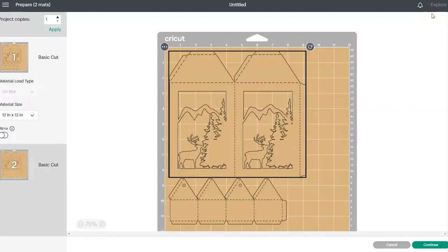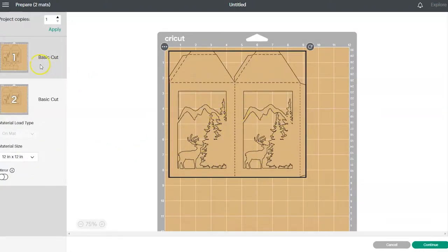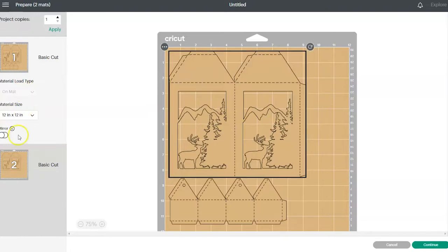And then you'll be taken to this screen. And this is just going to show us what the design is going to look like on the cutting mat. So it shows that we're going to need two sheets of cardstock. If everything looks good here, you can click on the green continue button.